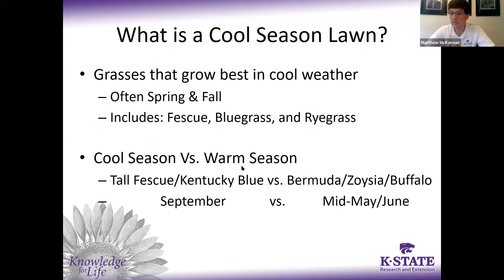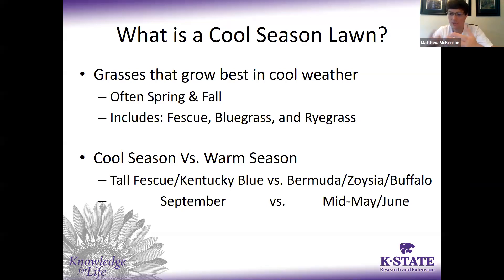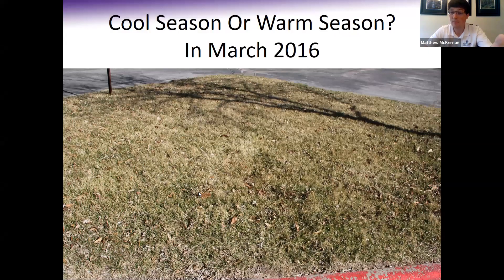Warm season lawns — Bermuda grass, zoysia grass, buffalo grass — the same principles apply, just using a different time of year. For Kentucky bluegrass and tall fescue, September is the ideal month to do most all of these things. For warm season grasses, it's the same practices but held off until the mid-May to June timeframe for fertilization, core aeration, and things like that. It's important to know your grass so you know the best time to take care of it, because advertising in newspapers or on TV isn't necessarily selling you what you need during the times you need it.